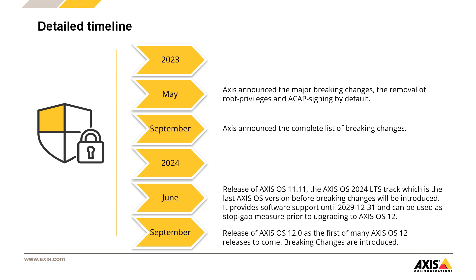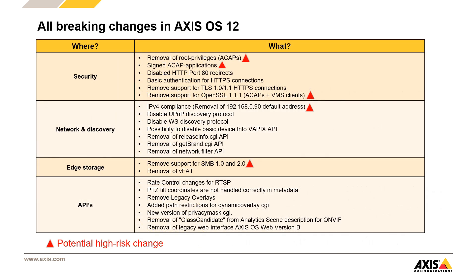We have also seen our partners helping us with this, and we appreciate their effort. Looking at the actual breaking changes on a high level — more technical details and explanations are available on access.com, this is just a simplified overview. I recommend reading through all of them, but I want to highlight the potential high risk changes specifically. The removal of root privileges and the introduction of signed ACAPs are certainly interesting for our ACAP developing partners. The removal of the deprecated OpenSSL 1.1.1 software component probably needs to be checked by both ACAP developers and VMS partners alike.